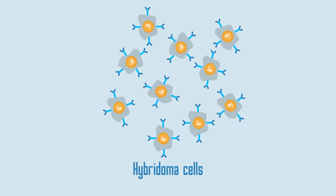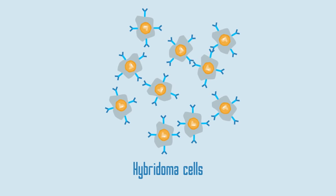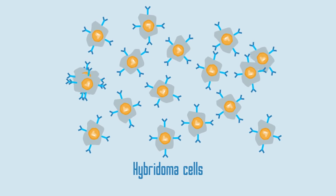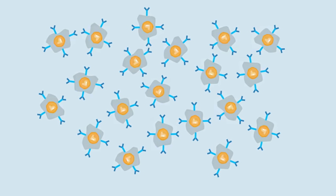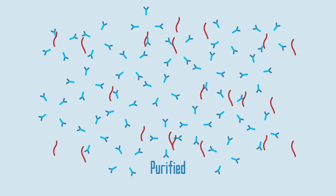This fusion cell is called a hybridoma cell. The hybridoma cells reproduce rapidly to make cloned cells, which all make the same antibody. These monoclonal antibodies are collected and purified, ready for use.